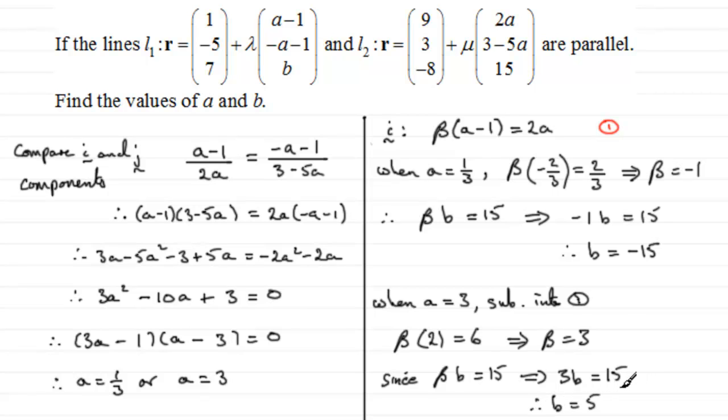So we've got the corresponding values of a and b, OK? So we've got when a equals a third, b equals -15. And when a equals 3, b equals 5. So I hope you were able to get that, and understand this concept then about parallel lines, that the direction vectors must be in the same ratio. OK?